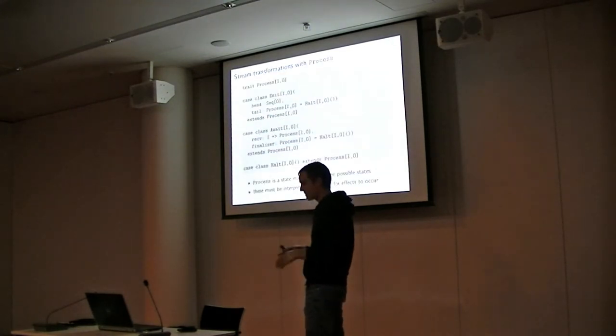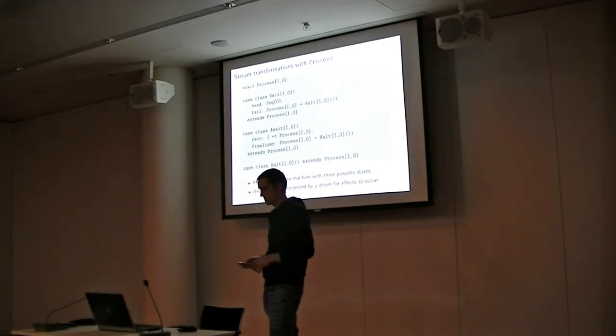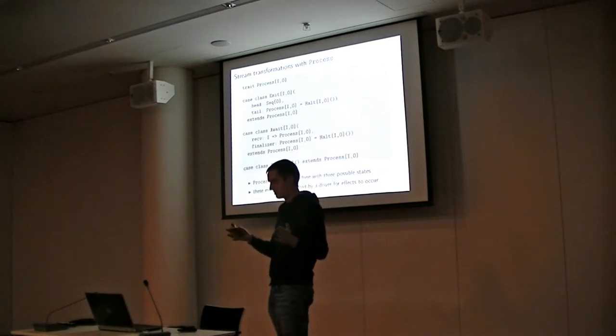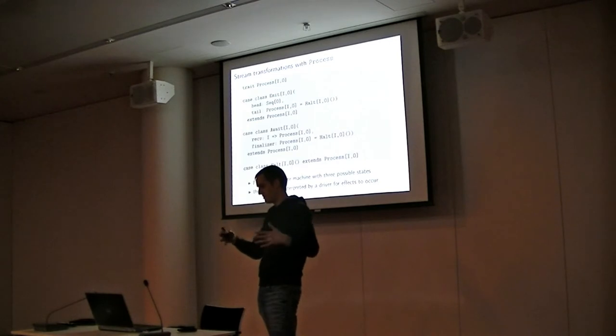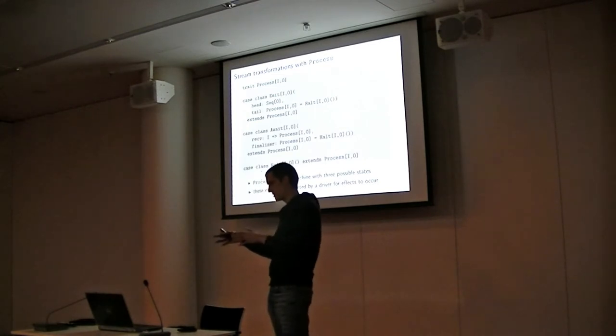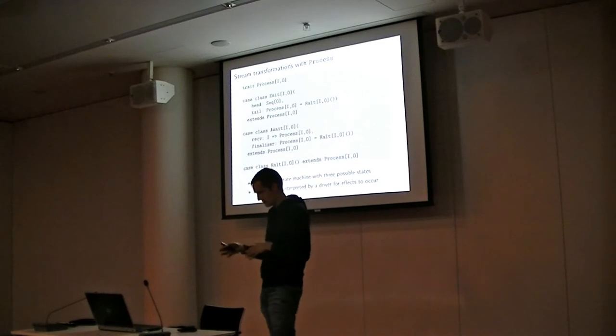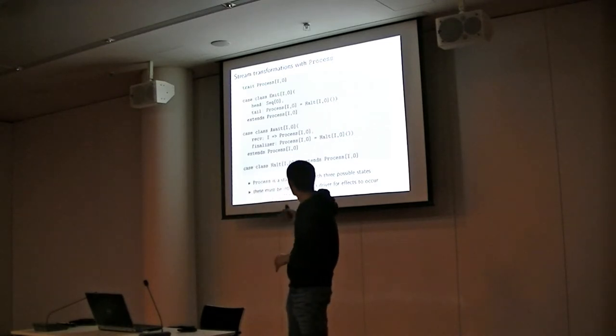Now to the basic type of Scala.Stream, the basic idea is the Process I/O type. The Process I/O type is a kind of function that takes a stream of I values to a stream of O values. But it's not a separate function—it describes this transformation itself. It's actually a state machine which can be in three different states, and these states have to be interpreted by the driver for effects.